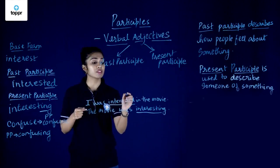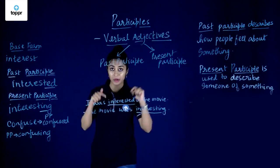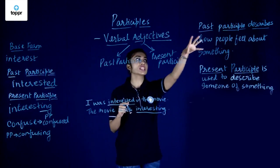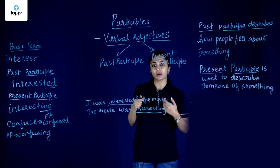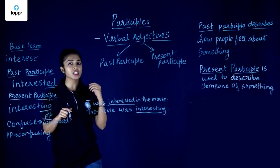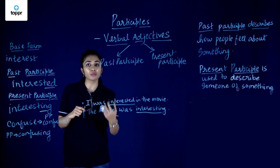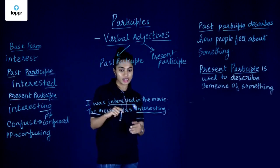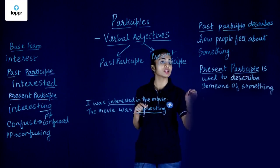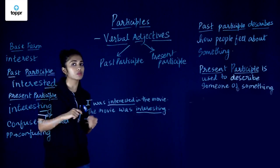Notice again: we have added an -ed to form the past participle and added an -ing to form the present participle. The past participle is used to describe how people feel about something or someone. In the first sentence, 'I was interested in the movie' uses the past participle 'interested' to describe how I feel about the movie. In the second sentence, 'the movie was interesting' uses the present participle to describe something — in this case, the movie.